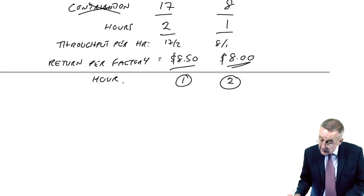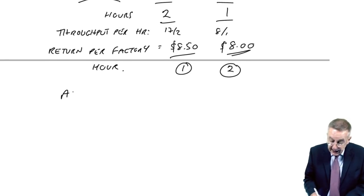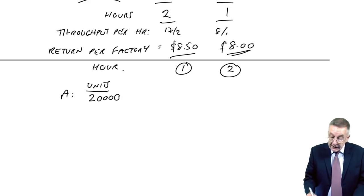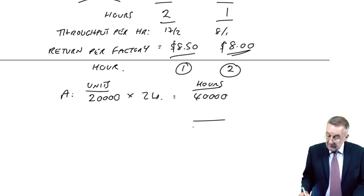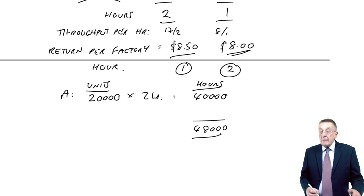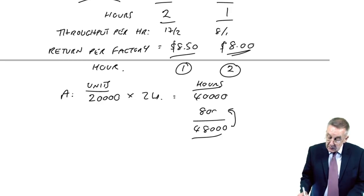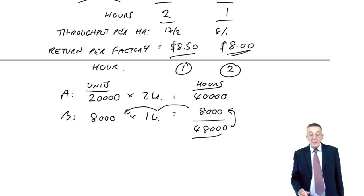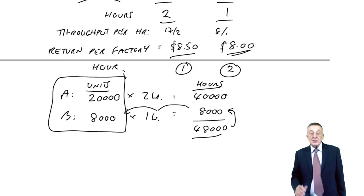So every hour making A generates 8.50, every hour making B generates $8. And so this time, it turns out A is the best use of the limited hours, B is second best. What's our production plan? We'll make A first. But we won't make any more than we can sell. The maximum demand is 20,000. So we'll make 20,000 A's, which takes up 40,000 hours. With 48,000 hours in total, the remaining 8,000 hours will be used to make B. Since B is one hour a unit, we'll make 8,000 B's.